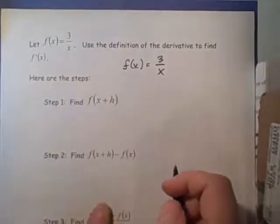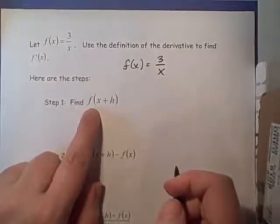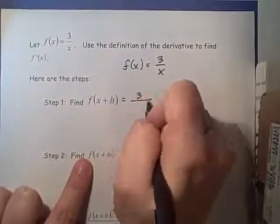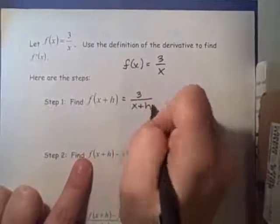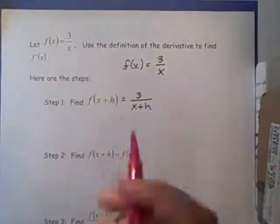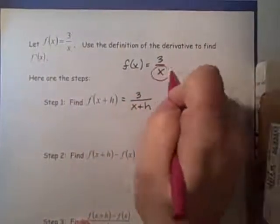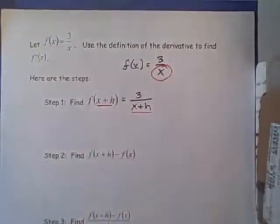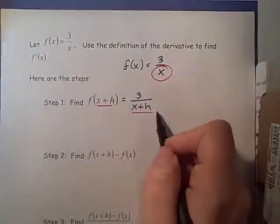So step one is to find f of x plus h. We are going to have 3 over x plus h. Remember, wherever I had an x, I now have an x plus h. So that step was pretty easy.